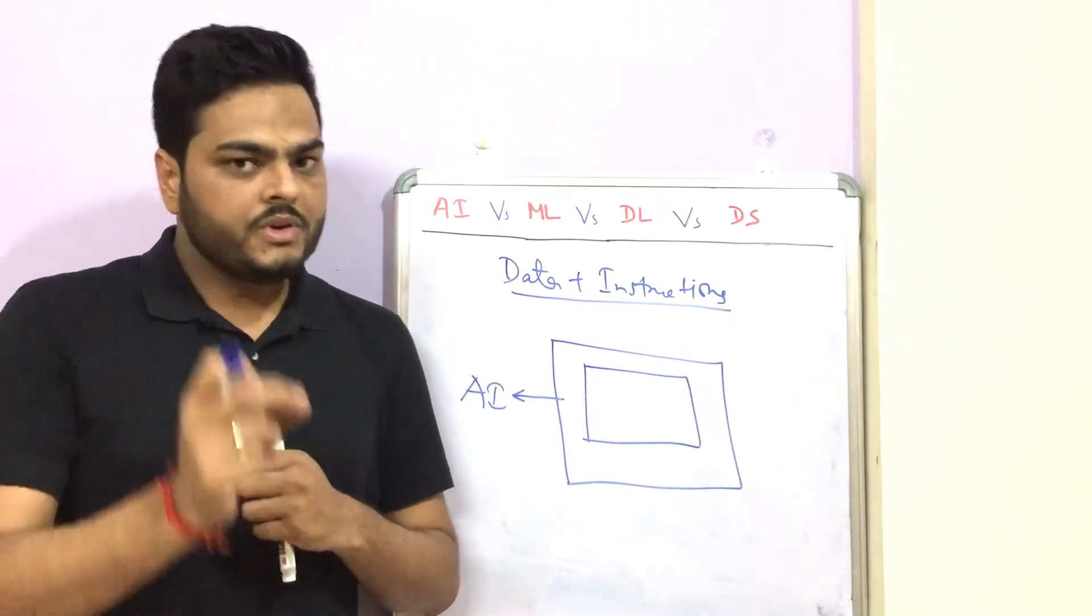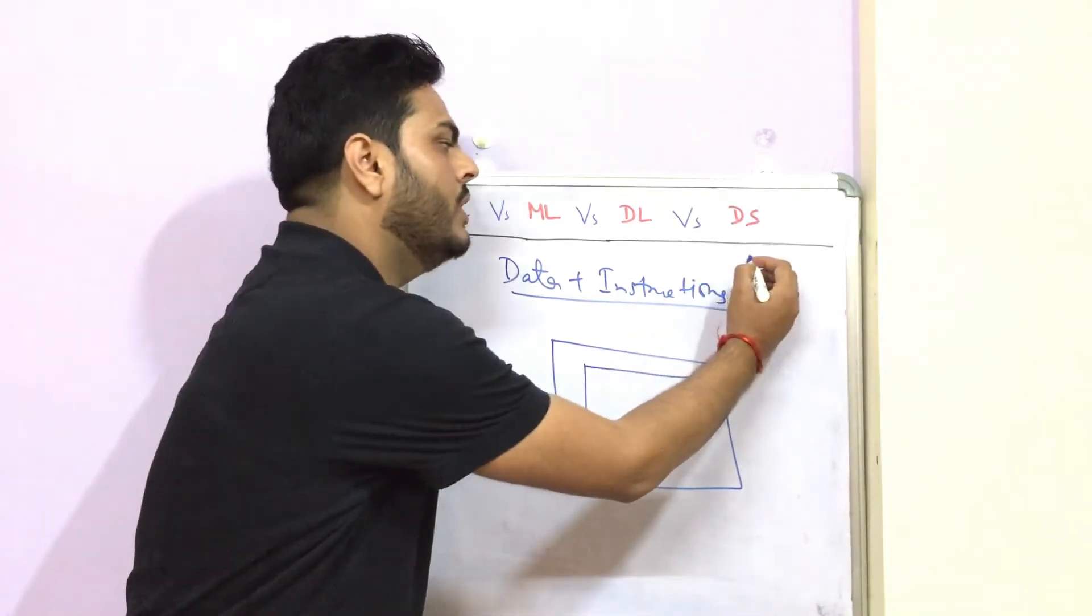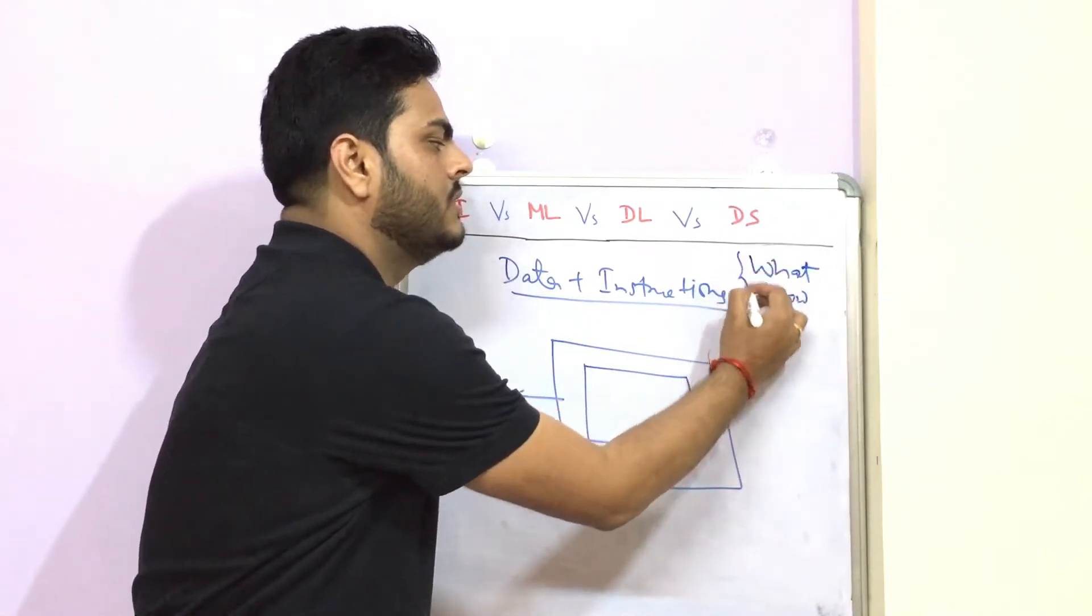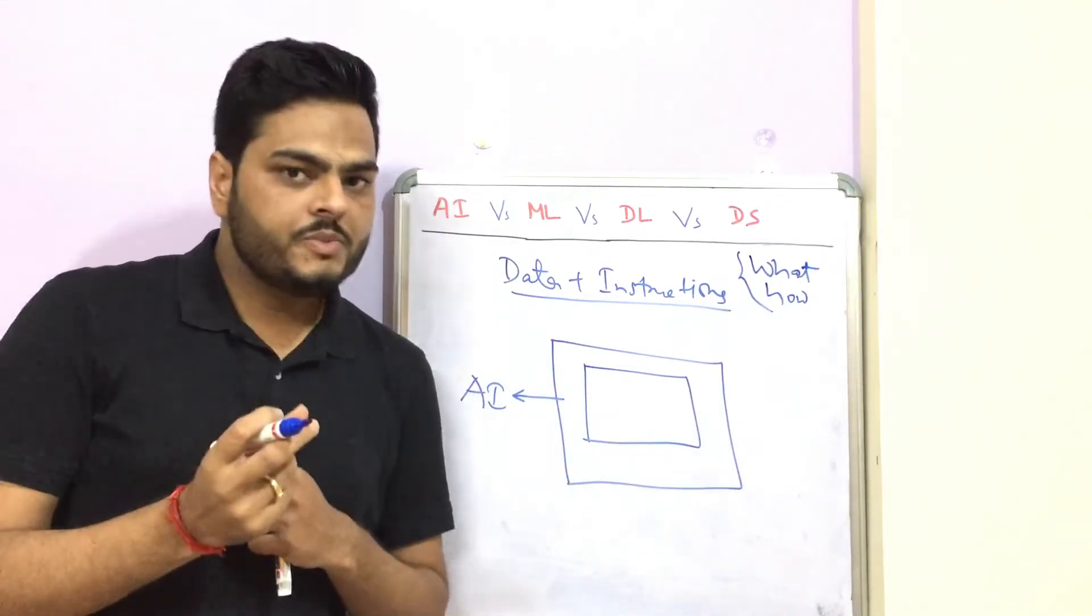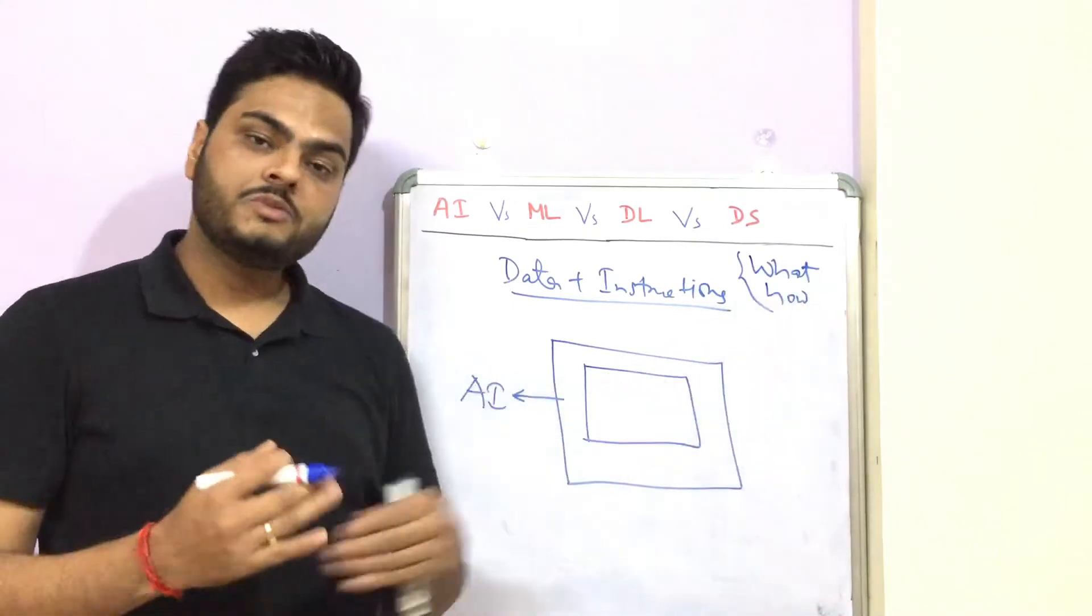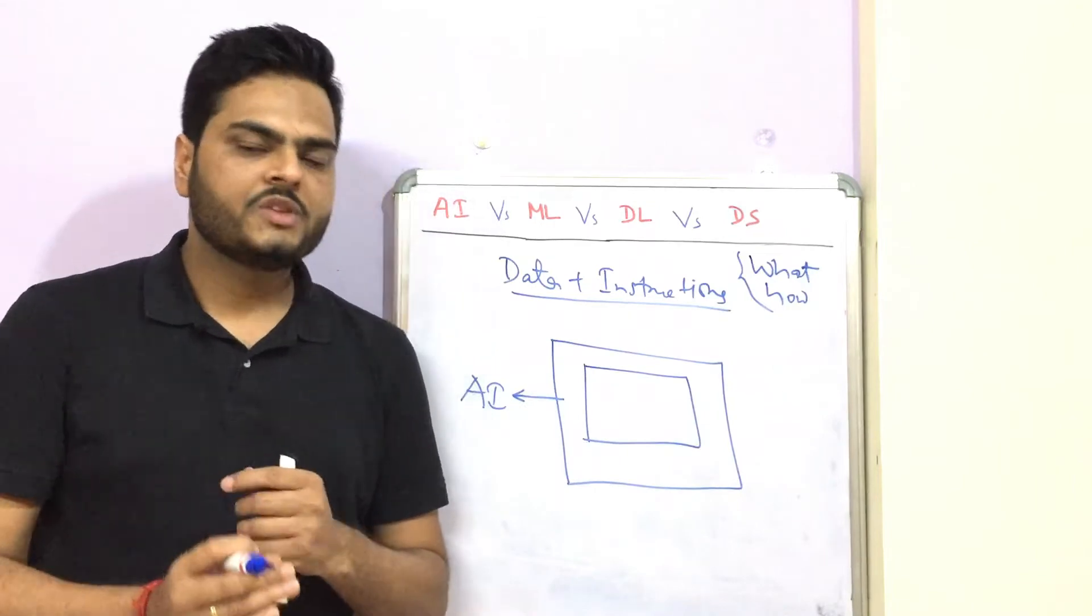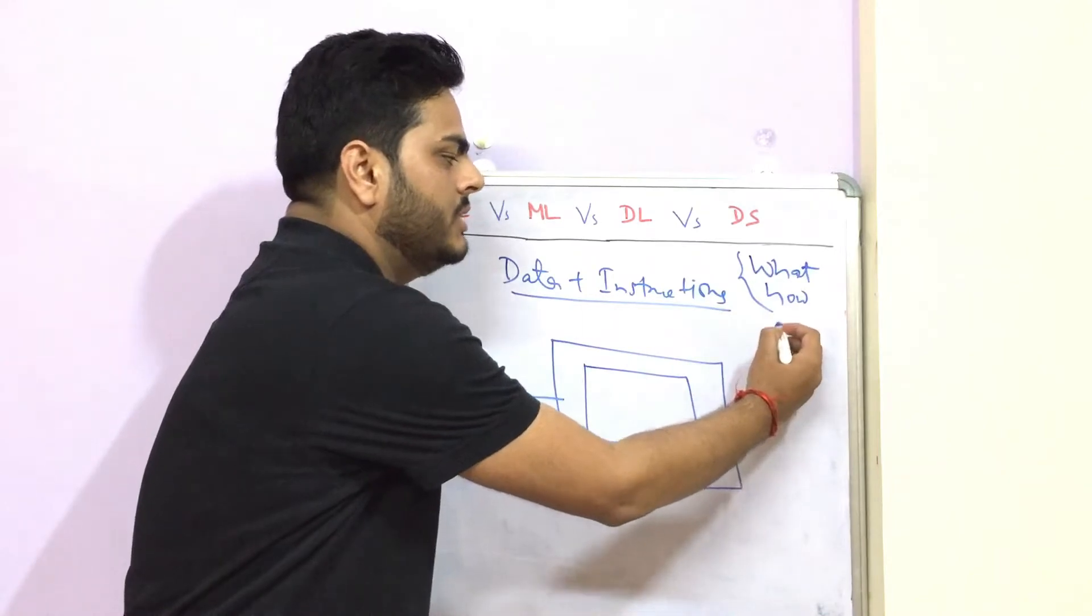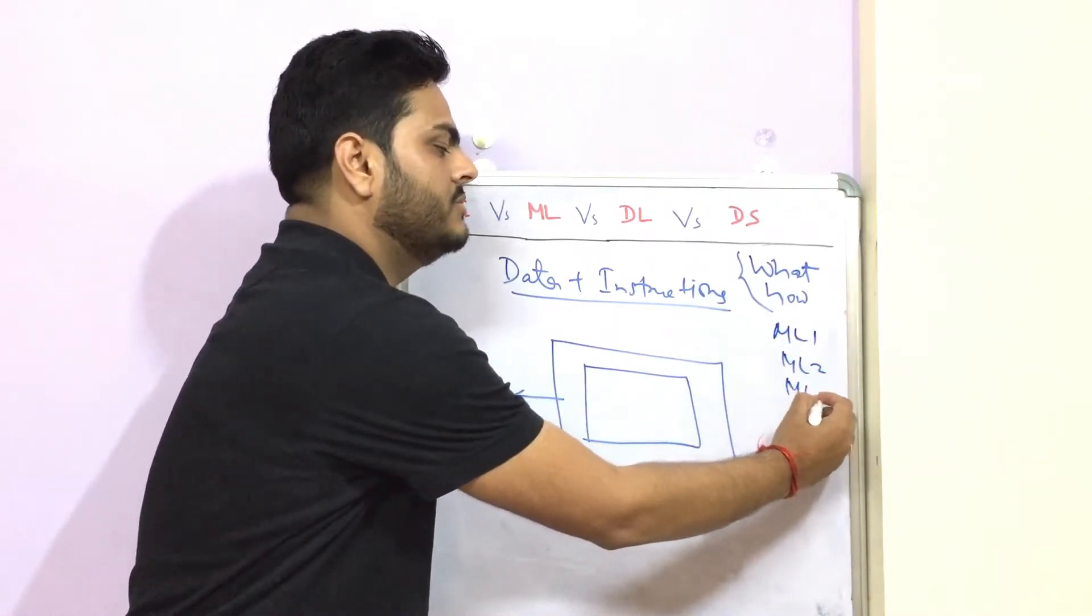Now when we talk about learning pattern, there are two things: one is what to learn, and next is how to learn. In the example I gave just now, what is being learned is my purchase behavior, and how that is being learned is using some machine learning algorithm. There are different machine learning algorithms out there.